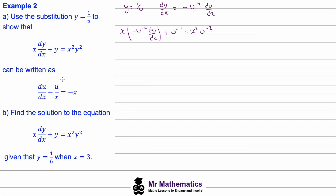We need du/dx isolated, so we multiply everything by u squared. This cancels the u to the negative 2 terms and gives: negative x du/dx plus u equals x squared. Dividing everything by negative x gives du/dx minus u/x equals negative x, which is the form we were asked to show.